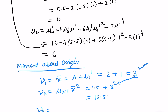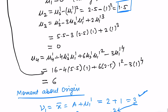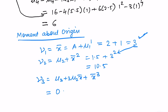For mu 3 prime, the formula is mu 3 plus 3 times mu 2 times x-bar plus x-bar cubed. Substituting mu 3 equals 0, mu 2 equals 1.5, and x-bar equals 3: 0 plus 3 times 1.5 times 3, plus 3 cubed. The answer comes out to be 40.5.